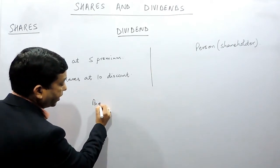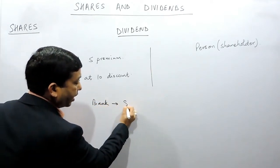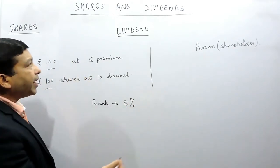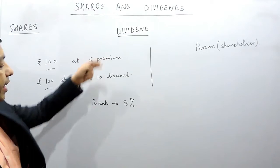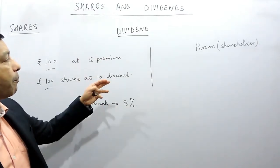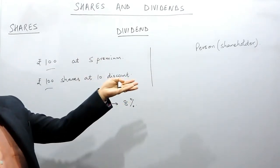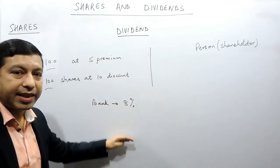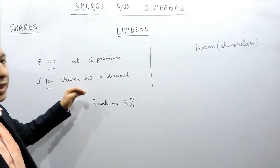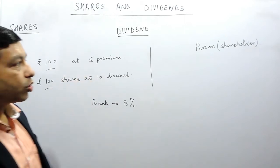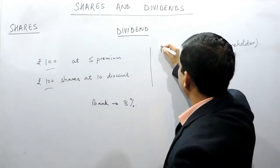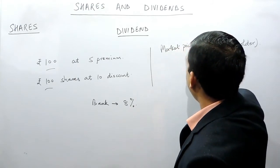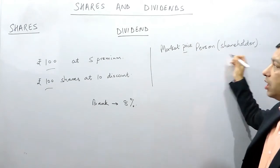If the bank rate of interest is approximately 8%, and the company is paying a dividend more than 8%, then the price of the share will increase. While if the company pays a dividend less than 8%, then the price of the share will decrease. So the market price is another term for the share, and that is relevant for the shareholder.